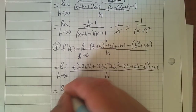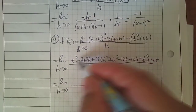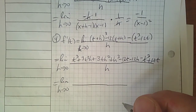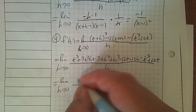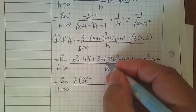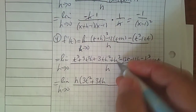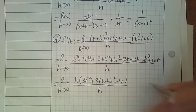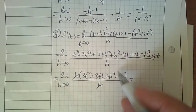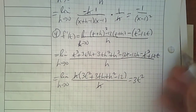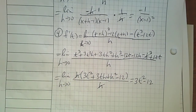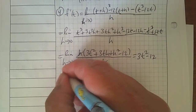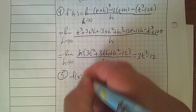Next, combining like terms: t³ minus t³ and -12t plus 12t eliminate. What's left is only that which has an h in it. I factor out an h right away: h(3t² + 3th + h² - 12). The h's divide out, plug in 0, and what you're left with is 3t² subtract 12. Because you already know the shortcuts, you can double-check using the power rule. But we still need to have this skill before we do the shortcuts.